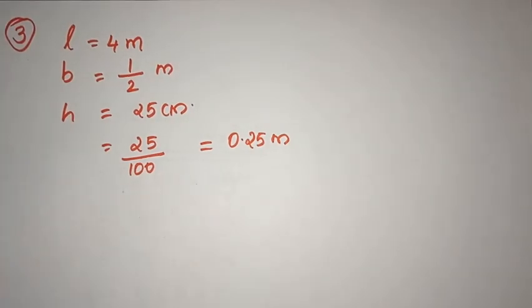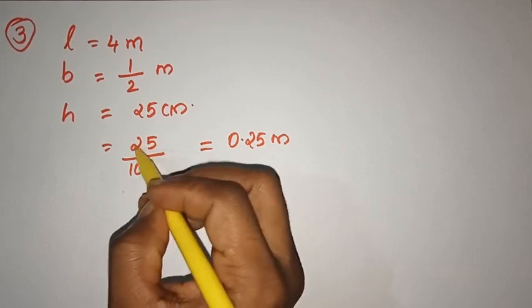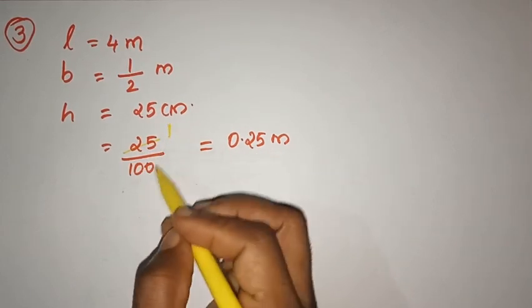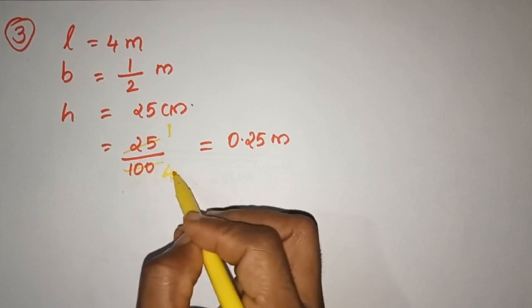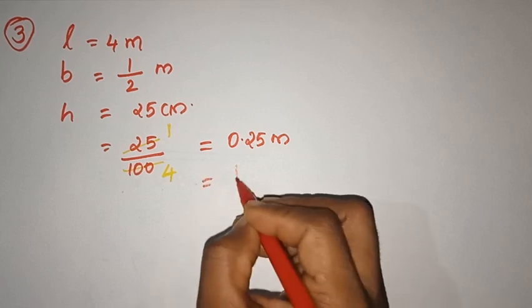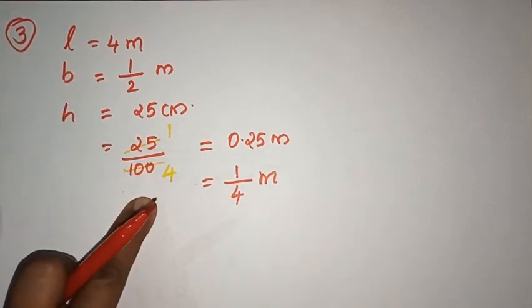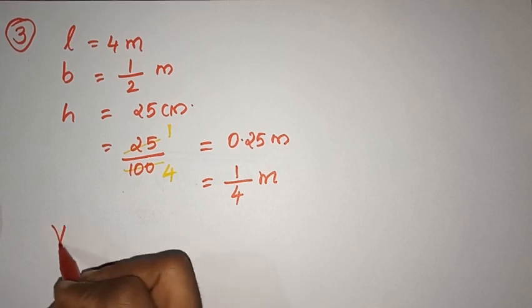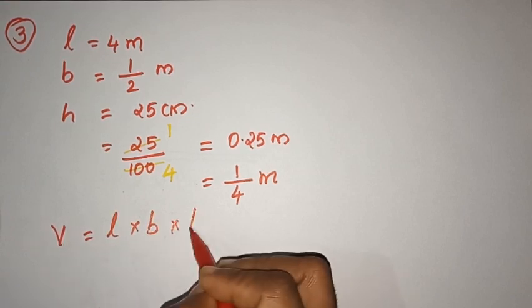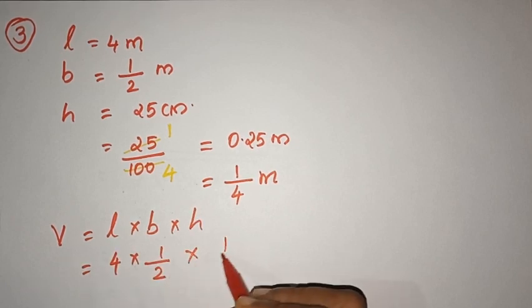It is a simple 25 divided by 100. Looking at the 25 multiplication table: 25 into 4 is 100, so 25/100 simplifies to 1/4. So height is 1/4 meter. Volume equals length into breadth into height: 4 into 1/2 into 1/4.